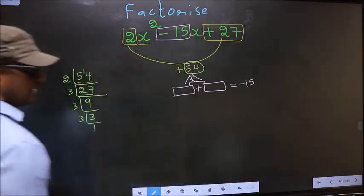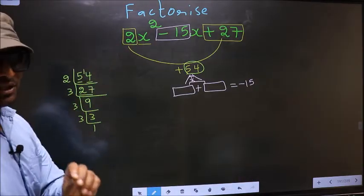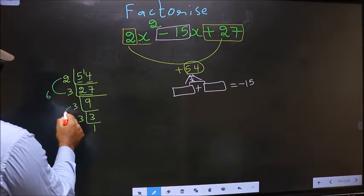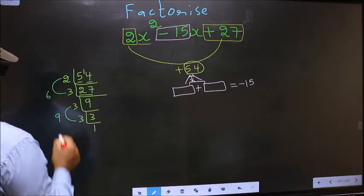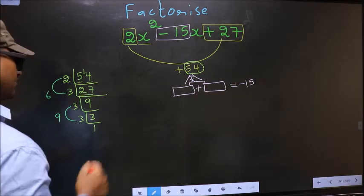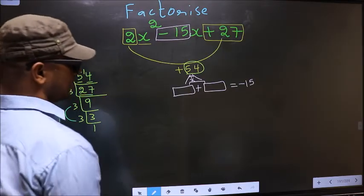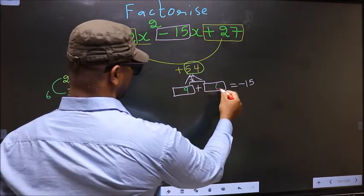Now, the 2 numbers should be 2 into 3, 6 and the second number is 3 into 3, 9. 9 plus 6, 15, 9 into 6, 54. So here you write 9 and here 6.